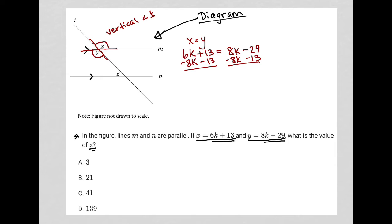And I get 6K minus 8K, which is negative 2K. The 13s cancel out. The 8Ks cancel out. Bring down my equal sign. And negative 29 minus 13 is negative 42. I can then divide both sides by negative 2. And what I'll get here is that K is equal to positive 21.